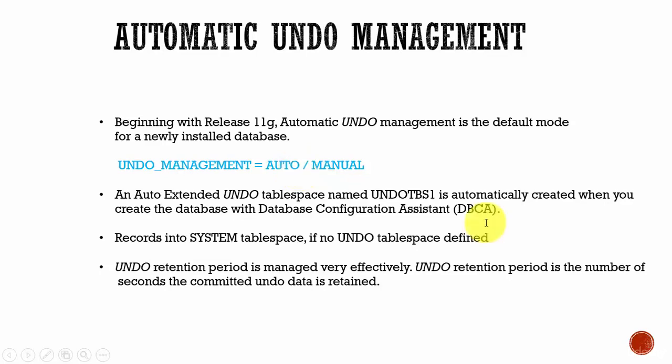By default, a tablespace called UNDOTBS1 is created when you create the database using the Database Configuration Assistant. If you don't create any undo tablespace, it records the undo data in the SYSTEM tablespace — which is a strict no-no. You need to have a separate tablespace for undo; don't store it in the SYSTEM tablespace.